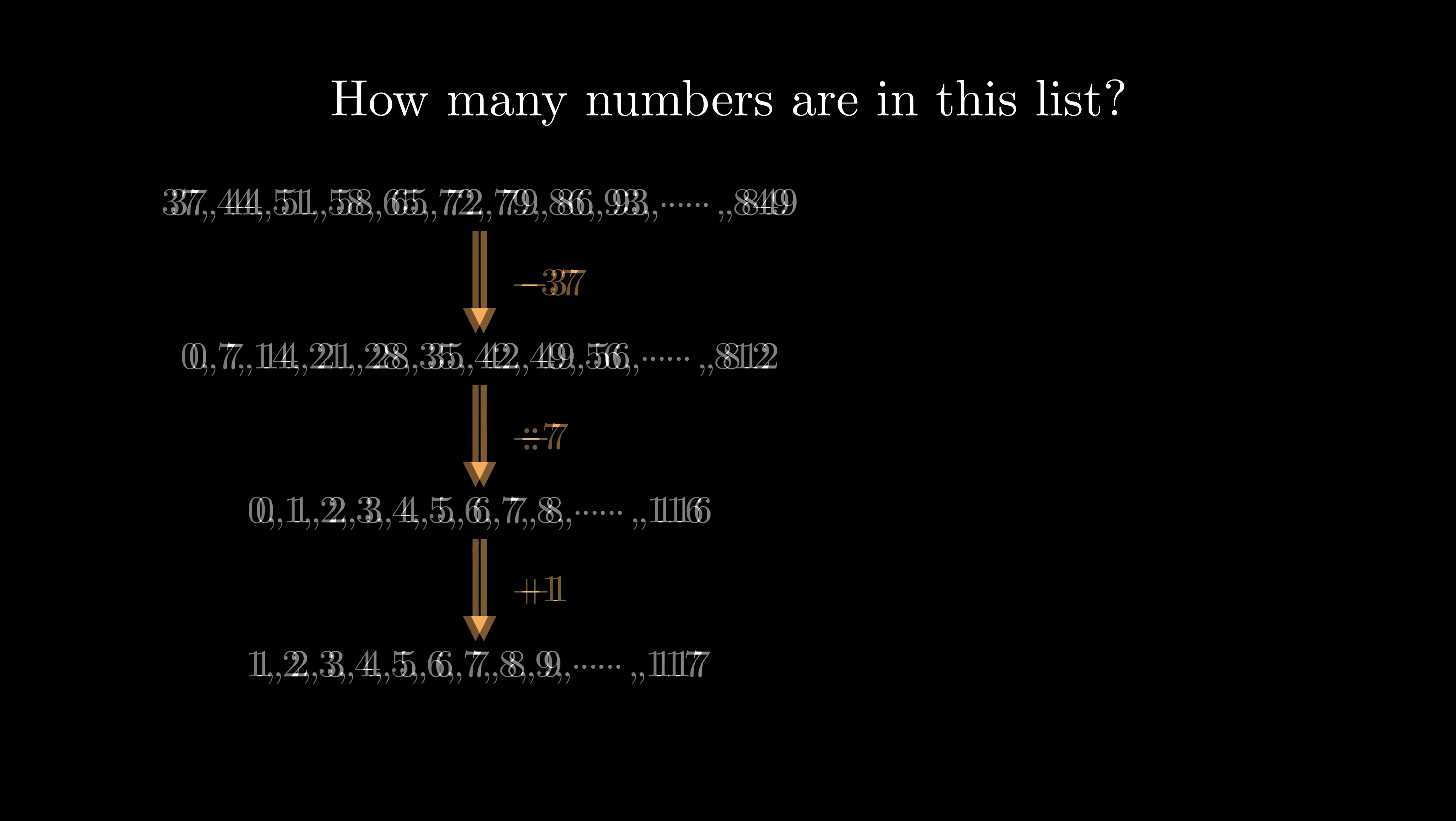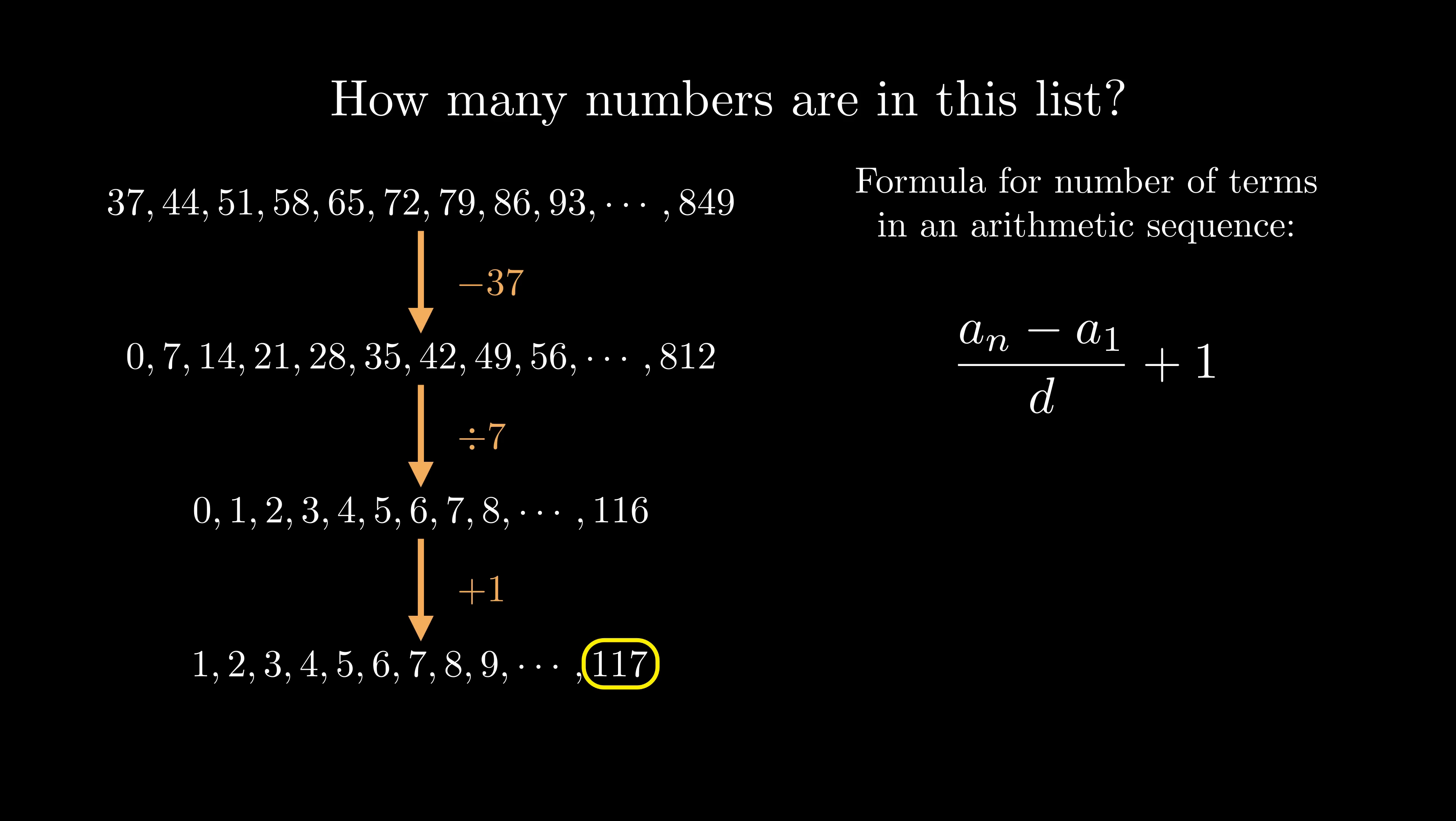But it gets better. Look at the last numbers of each of the lists we made, and try to follow the rules we used to get from one list to another. This is exactly the formula we used before. Not only does the bijection method demonstrate why the plus 1 is necessary in the formula, it also means that we never need to memorize this formula in the first place, because the bijection method can be used to just derive the formula.